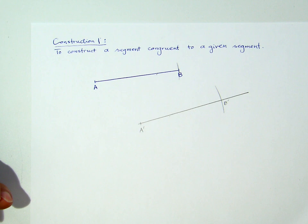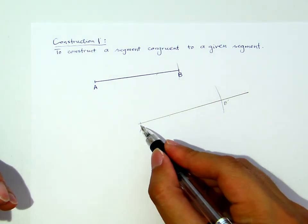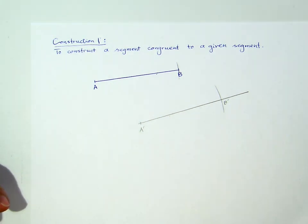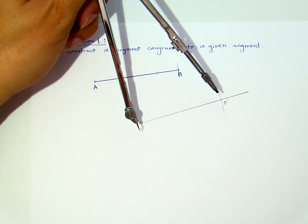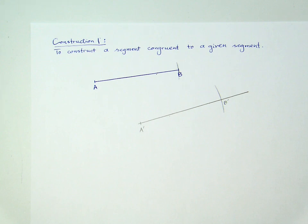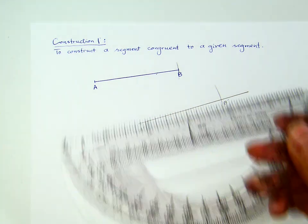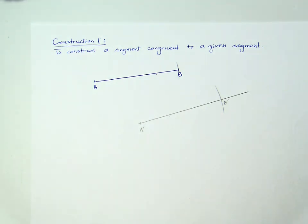Now the length from A' to B' will be equal to the length from A to B. Why? Because the opening of the compass are the same. So notice that we do this first construction, we copy segment A and B without actually measuring the length of AB.